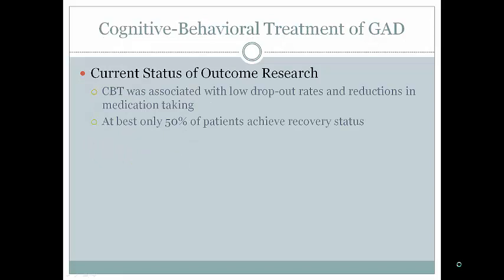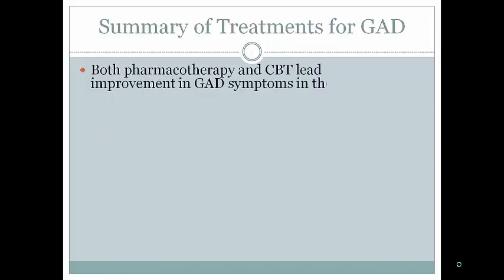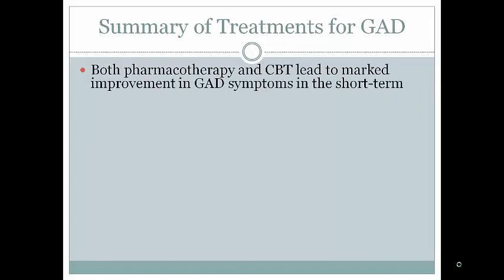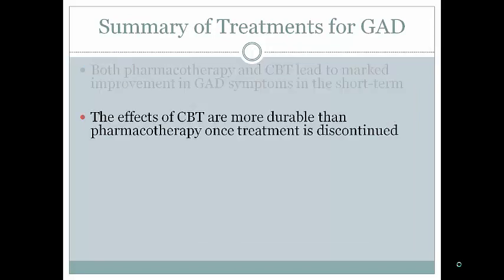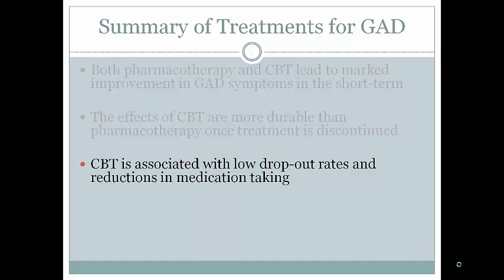Research on GAD is still developing, but CBT is associated with low dropout rates and reductions in medication use — Xanax is not an answer, and people who stop taking it often relapse quickly. However, at best only about 50 percent of patients achieve full recovery status, though symptoms can be minimized in many others. Both pharmacological therapies and CBT lead to marked improvement in the short term, but CBT effects are more durable once treatment is discontinued.